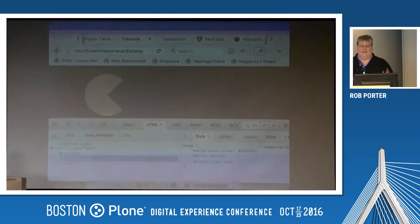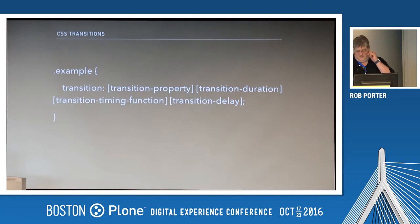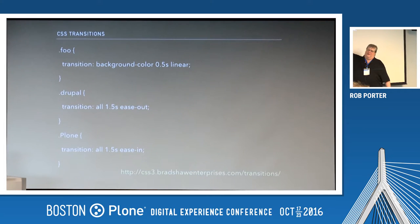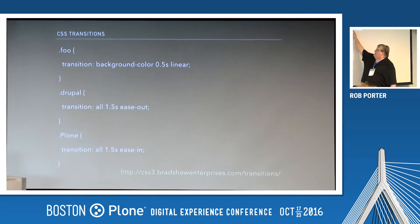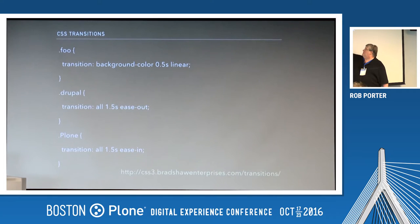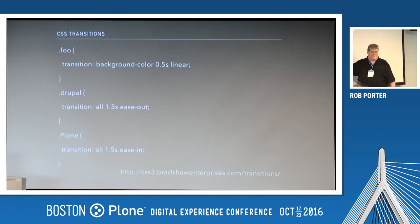Now we're going to talk about transitions — this is where it gets really cool, where that stuff that looks kind of janky becomes more smooth. When there's some kind of change on your class — like a hover — something changes. You have the CSS attribute, how much time, what style is it going to move — is it linear, ease out, ease in? You can separate these like background-color, color, font in commas, and stack those up at different speeds. This is the all-encompassing: if you put 'all', everything that changes between before and hover will change if it's allowed to.